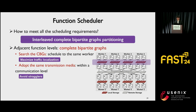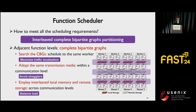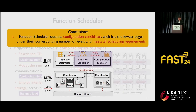Because traffic at each communication level can be fully localized, we adopt the same transmission media within a communication level to avoid stragglers. Additionally, we employ interleaved local memory and remote storage across communication levels to decouple the network so that the size of CBGs are bounded to facilitate load balancing. In conclusion, the function scheduler outputs configuration candidates, each with the fewest edges and meeting all scheduling requirements.